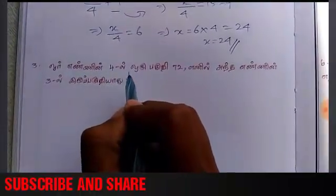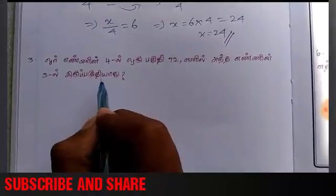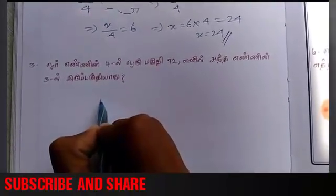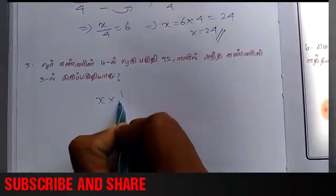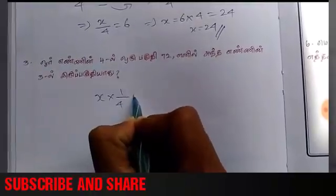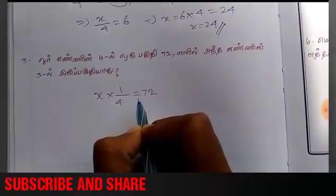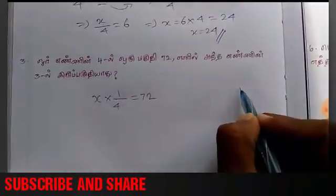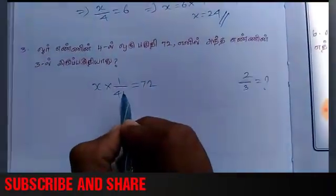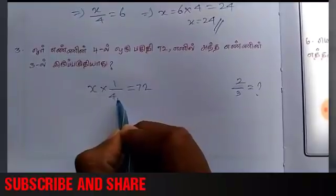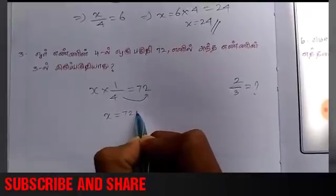One n is 4 into 72. One n is 3 into 72. One n is x is equal to 1 by 4. 4 is equal to 72. x is equal to 72. The by is equal to 4 into 72. The value is equal to 2 by 3. If we call it 3 into 32, we call it 2 by 3.